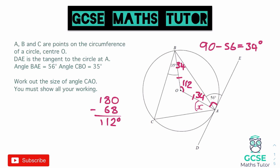There are different ways to go from here. We could use the angle at the centre being twice the angle at the circumference — that 112 at the centre gives 56 at the circumference. Or we could use the alternate segment theorem, since this cyclic triangle touches the tangent, making this angle equal to the 56 degrees. Either method gives us 56 degrees at the circumference.